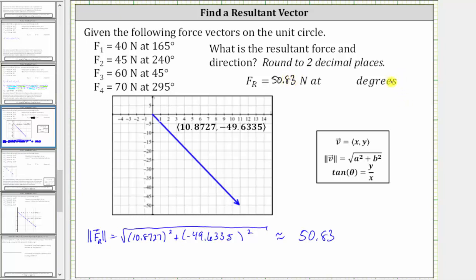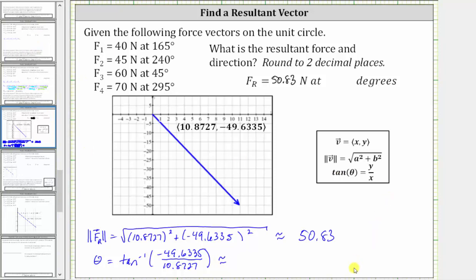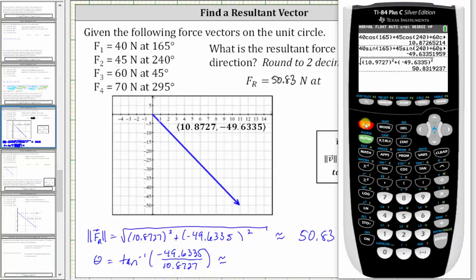And I need to find the direction by determining the angle theta, where tangent theta is equal to y divided by x. If we take the inverse tangent of both sides of the equation, we have theta is equal to inverse tangent or arctangent of y divided by x, which in our case is negative 49.6335 divided by 10.8727. And now going back to the calculator, we know we are in degree mode, so we press second tangent for inverse tangent, and then we enter the quotient. Enter. And we have approximately negative 77.64 degrees.